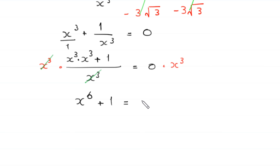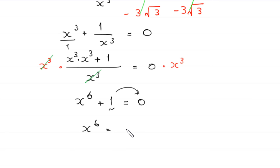Therefore x to the power 6 times x cubed will become 0. Moving the 1 to the right-hand side, this becomes x to the power 6 is equal to negative 1. Now we have the value of x to the power 6 equals negative 1.